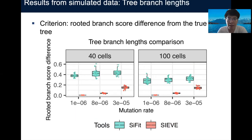The next thing we want to compare is tree branch lengths, where we use rooted branch score difference from the true tree as criterion. Again, the smaller the difference is, the better the results are. We only compare with one method here because the other doesn't report trees with branch lengths. It is obvious from the picture that SCIF outperforms the comparison method by a large margin in terms of tree branch lengths.